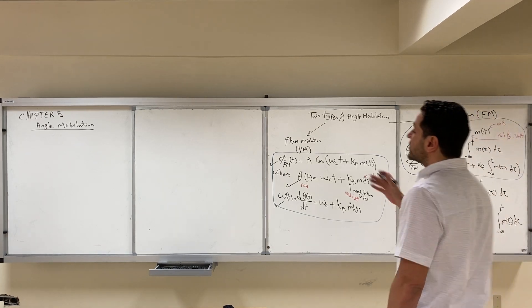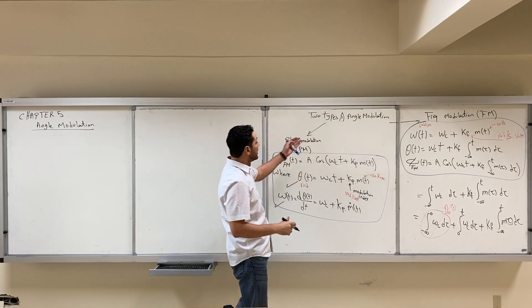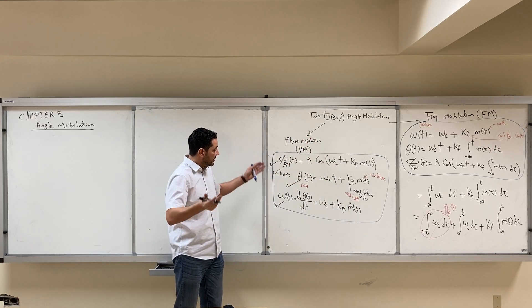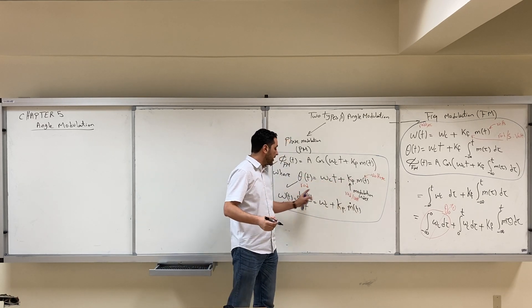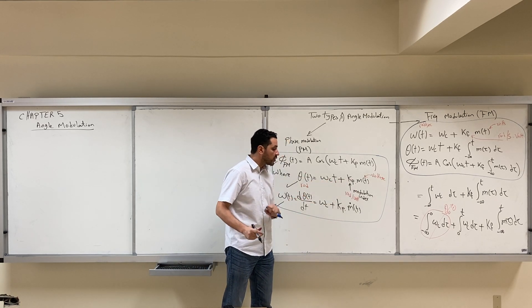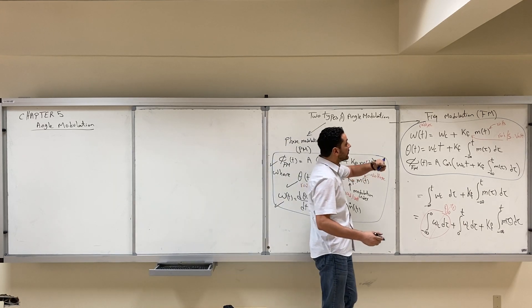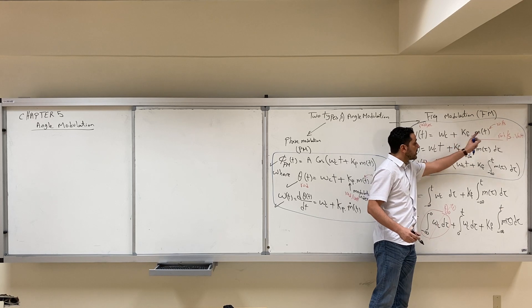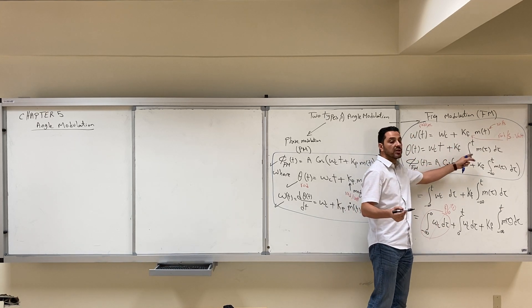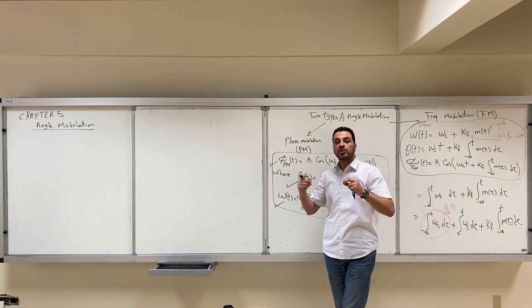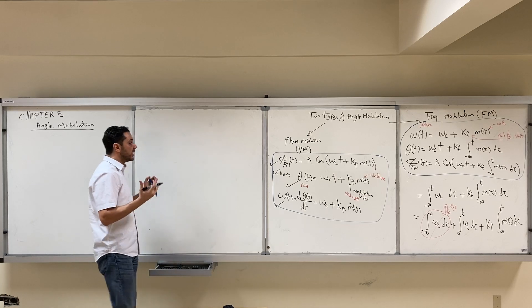In the previous video we discussed two special types of angle modulation: frequency modulation and phase modulation. In phase modulation, the phase is linearly proportional to m(t) while the frequency is linearly proportional to m-dot of t. In frequency modulation, the frequency is linearly proportional to m(t) and the phase is proportional to the integration. These two are special types of the general angle modulation.